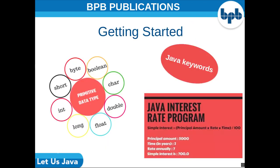Four important aspects of any language are: the way it stores data, the way it operates upon this data, how it accomplishes input and output, and how it lets you control the sequence of execution of instructions in a program. Data types are the most important and basic thing to understand. A data type specifies two things: what values can the data type take, and what operations can be performed on the data type.